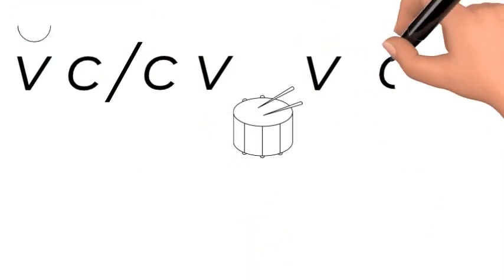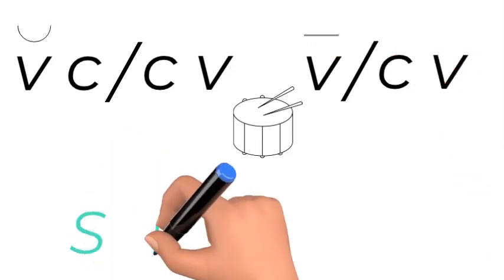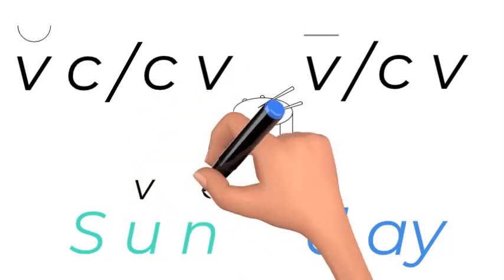Or you could look for vowel-consonant-vowel. Those are the two main syllable patterns. But in this case, we've actually got two words: sun and day. So usually you break them with the two words.